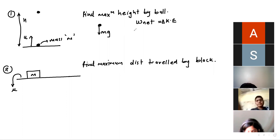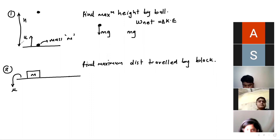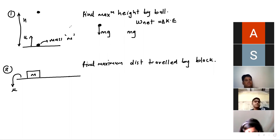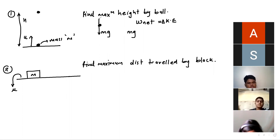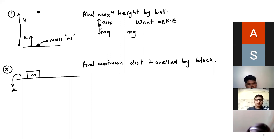Which force is acting here? Mg. Which axis? The displacement is happening in the y-axis, and the displacement in the y-axis is h. Mg acts downward, and displacement is happening upward. So what is the angle between both? They are opposite, so there will be a minus sign. Here it will be –Mgh.